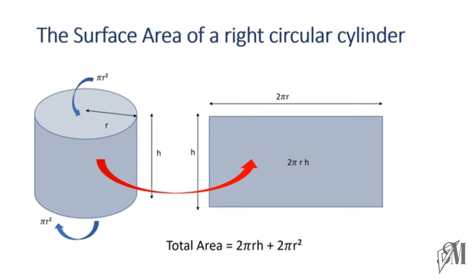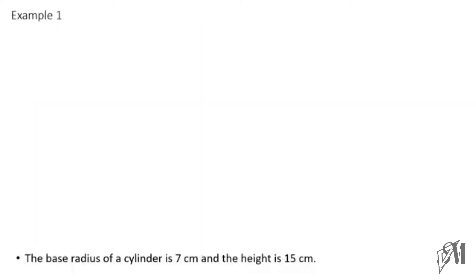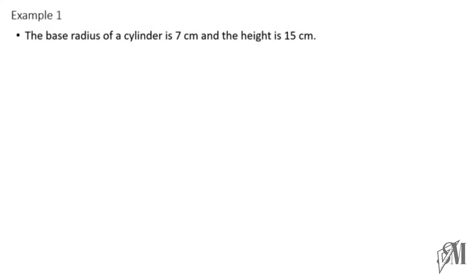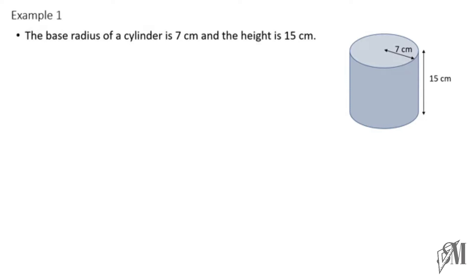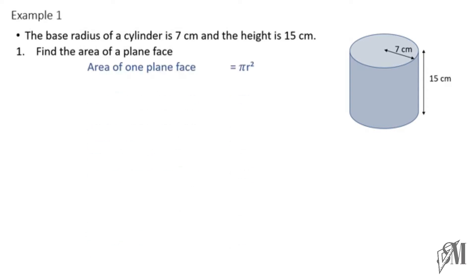Now let's look at some examples of how these two equations are used. The first example: the base radius of a cylinder is 7 cm and the height is 15 cm. The first part of the question is to find the area of a plane face. The plane face is the circular face, so the area of one plane face = πr².